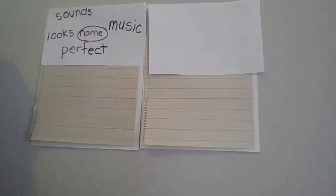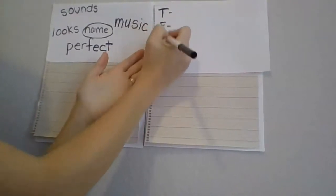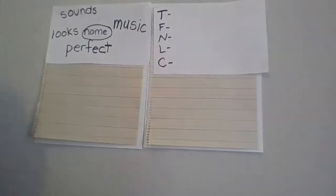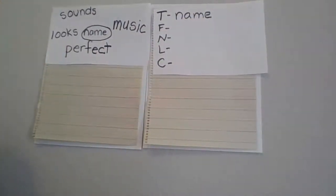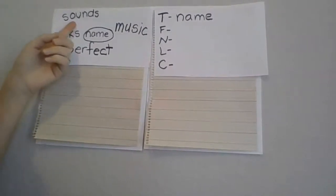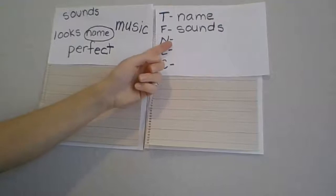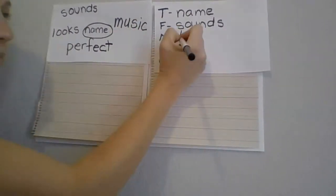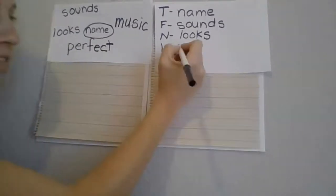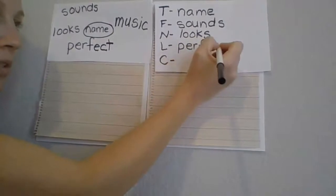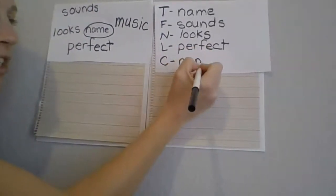All right, we are ready to organize our writing. We have all the reasons why Chrysanthemum liked her name, so let's go ahead and organize. Our topic is 'name' — why Chrysanthemum liked her name. Our first big idea was that she liked the way it sounds. The next big idea is she liked her name because she likes the way that it looks. The last big idea is that she thought it was absolutely perfect. I'm just copying from my notes. My closing matches my topic — the main idea of reasons why she liked her name.